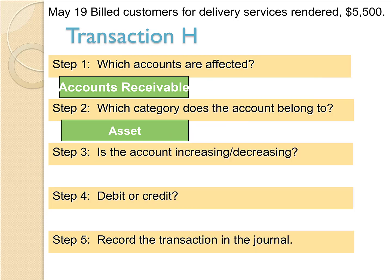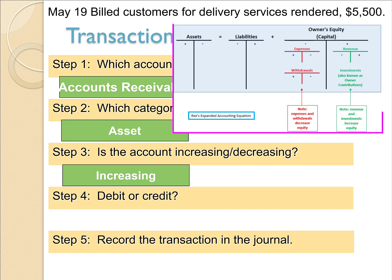And is our accounts receivable increasing or decreasing? It's increasing — they owe us more now that we've billed them and they have not paid us yet. And then we need to look at our accounting grid, also called the expanded accounting equation. If accounts receivable, which is an asset, is increasing, is that a debit or a credit? It's a debit.